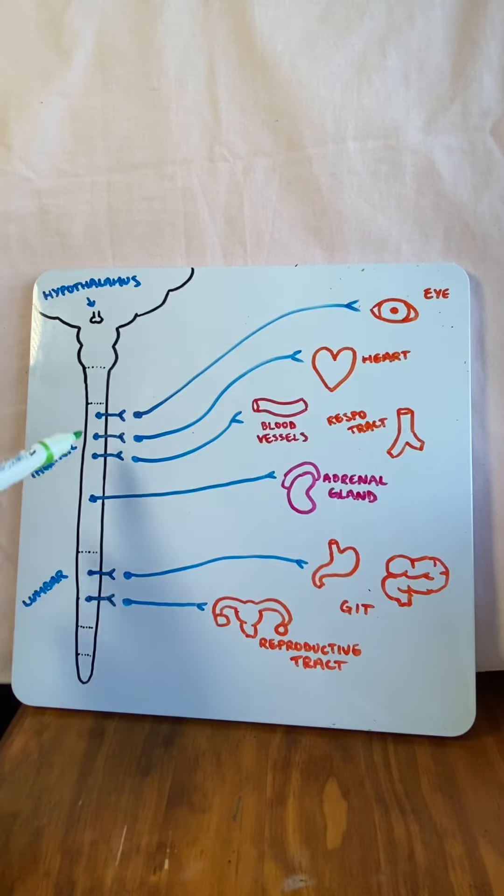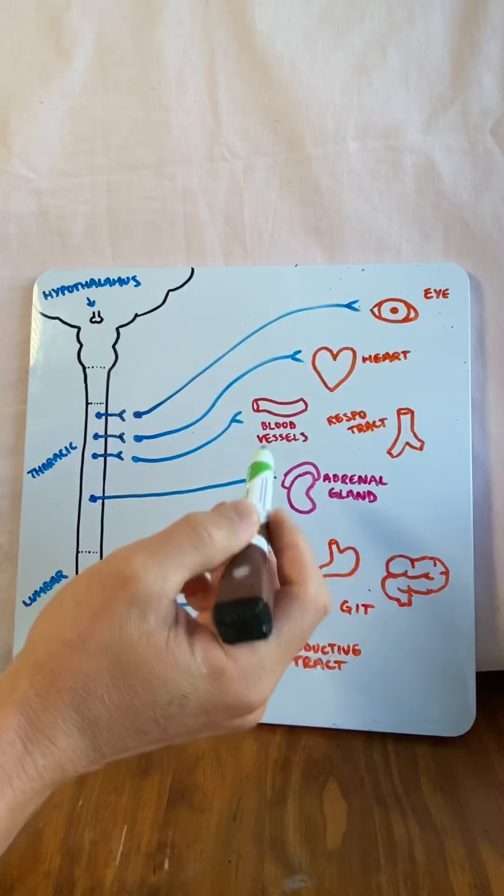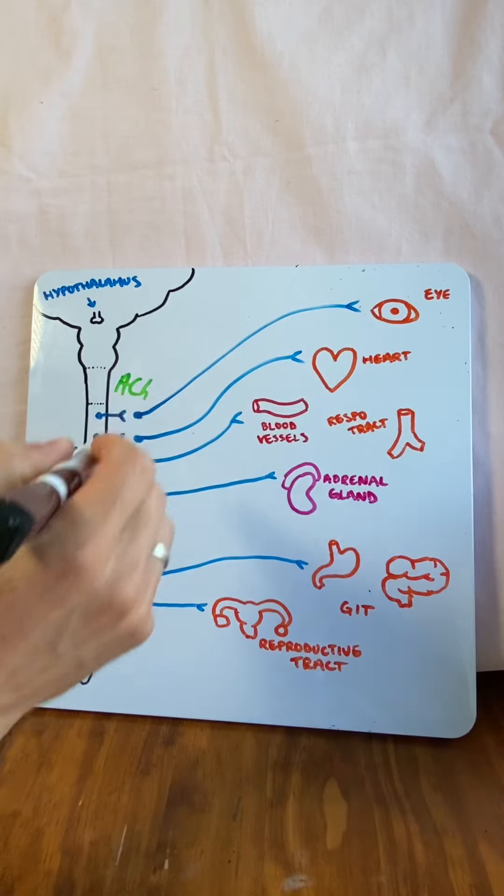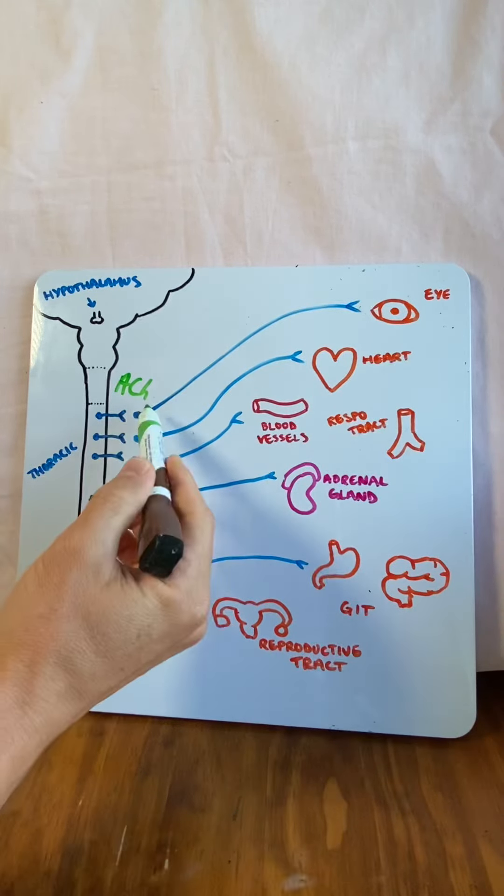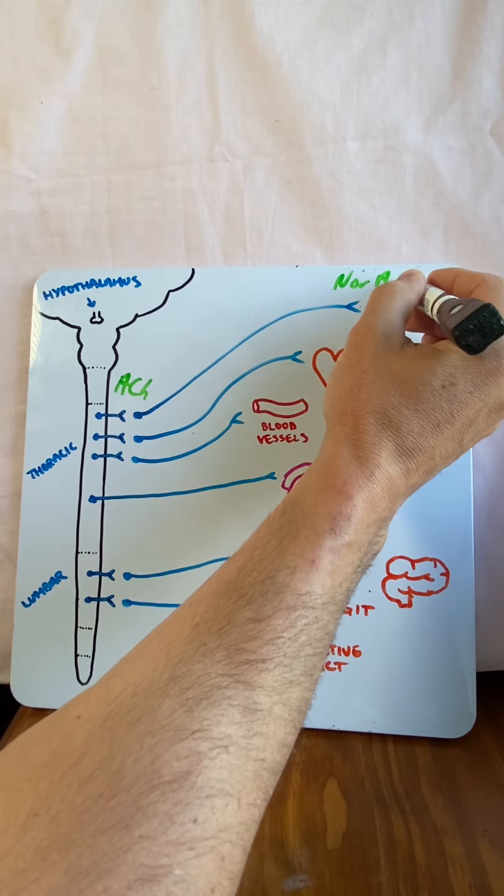The first neuron, known as the preganglionic neuron, is short. The postganglionic neuron is quite long and that goes to the target organ. The preganglionic neuron will release acetylcholine as its neurotransmitter and the postganglionic neuron will release noradrenaline, also known as norepinephrine.